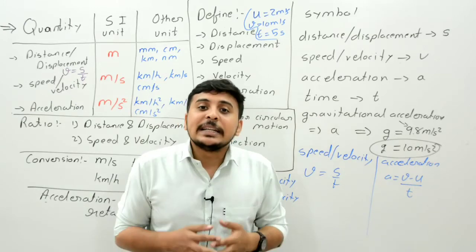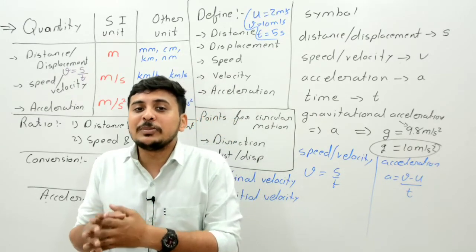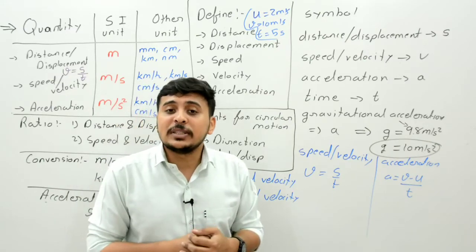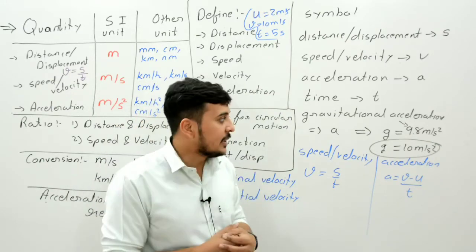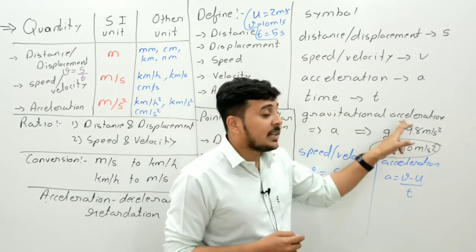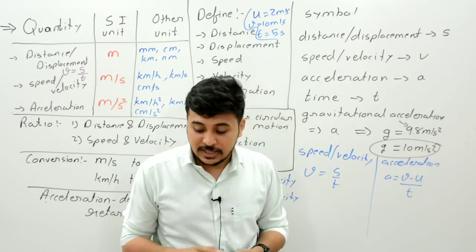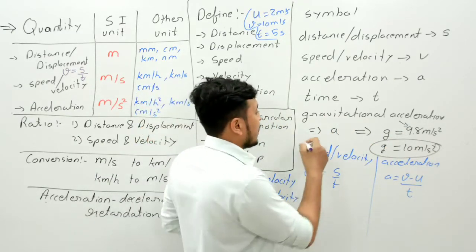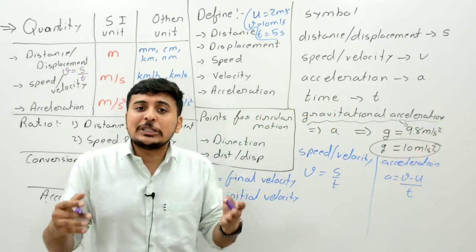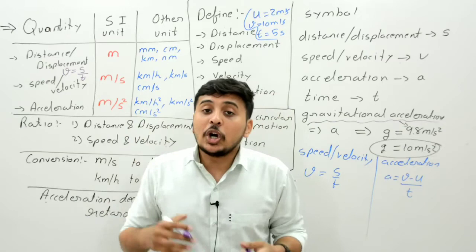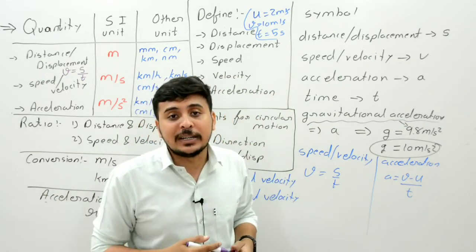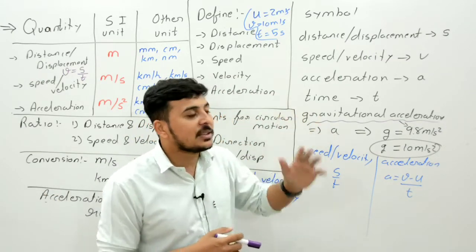The change in velocity of an object with respect to time is known as acceleration. Rate of change of velocity is known as acceleration. So definitions have been covered repeatedly. The acceleration — gravitational acceleration definition can also be asked: the acceleration produced due to the gravity of the Earth is known as gravitational acceleration of the Earth.